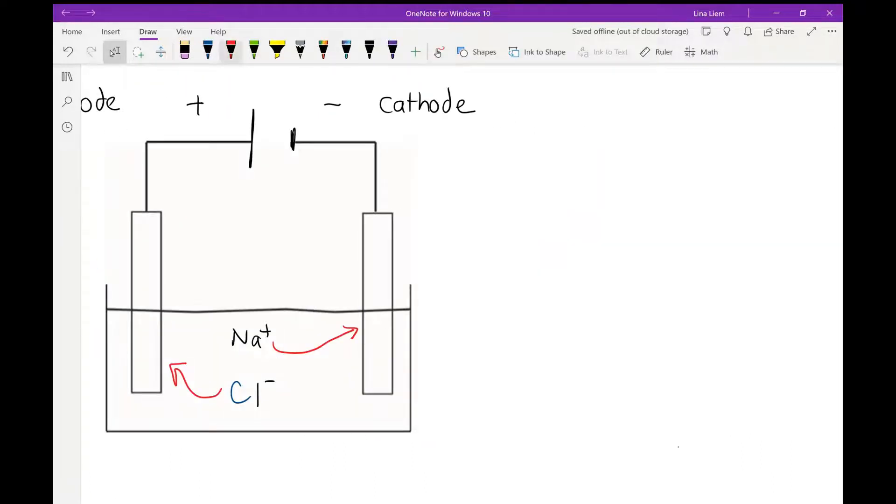On the cathode, sodium ion is converted to sodium metal, and the number of atoms is already balanced here but the charge is not balanced.